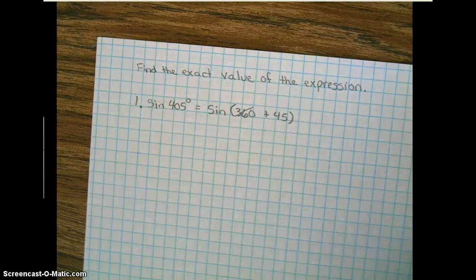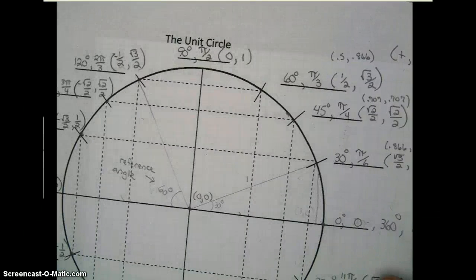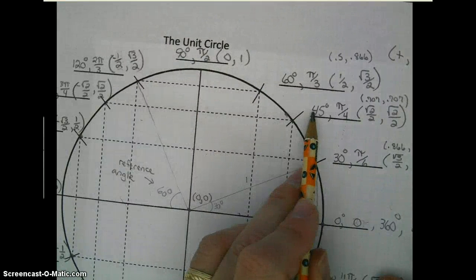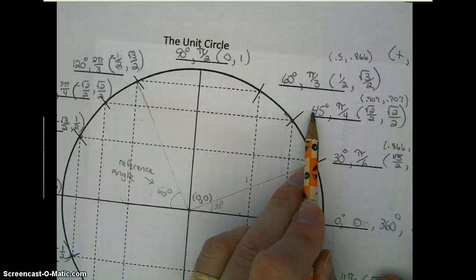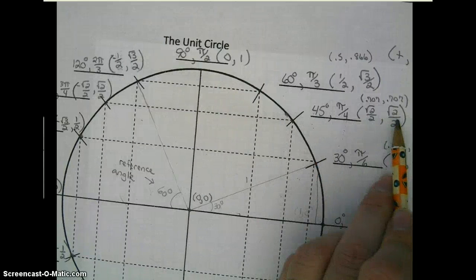And looking on our unit circle, 45 degrees, the definition of sine on the unit circle is y, so the answer would be the square root of 2 over 2.